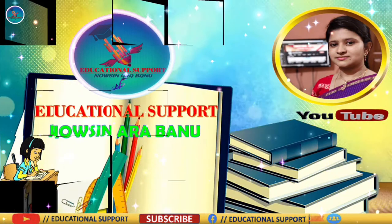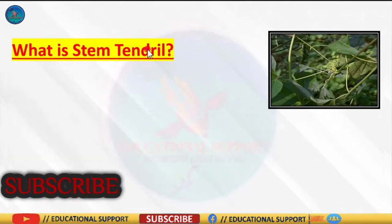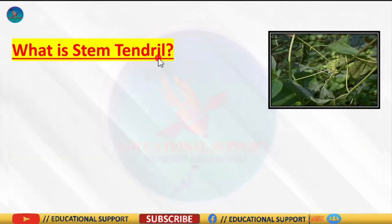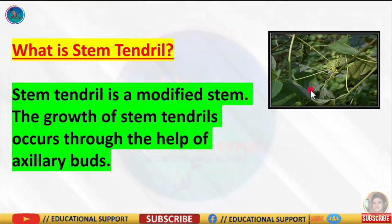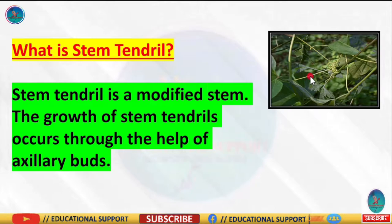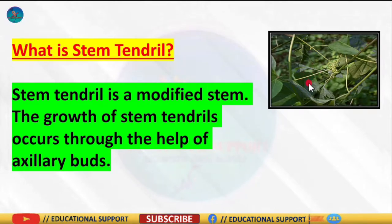So what is a stem tendril? A stem tendril is a modified or specialized stem or terminal bud. The growth of stem tendrils occurs through the help of axillary buds. Stem tendrils wind themselves around objects in order to stabilize the upward growing plant.